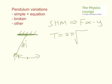2 pi square root L, which is the length L of the pendulum, over g. And so g is the gravitational field strength, 9.8 newtons per kilogram.